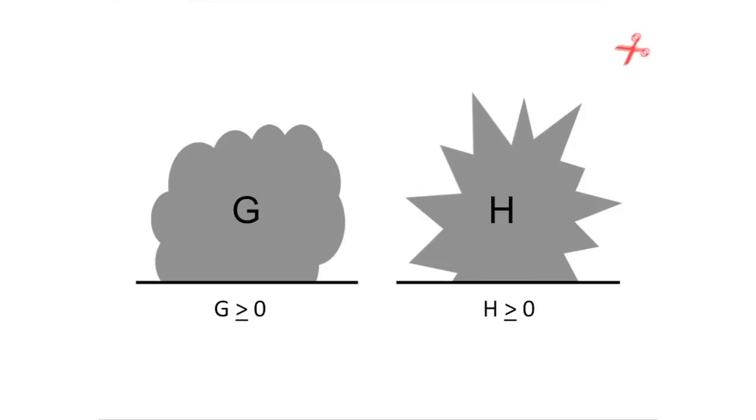we suppose that red begins by making an arbitrary move in the H component of G plus H. This changes H to H prime, which is no longer greater than or equal to zero. But blue, following his winning strategy within H, can respond by changing H prime to H double prime, which is again greater than or equal to zero.